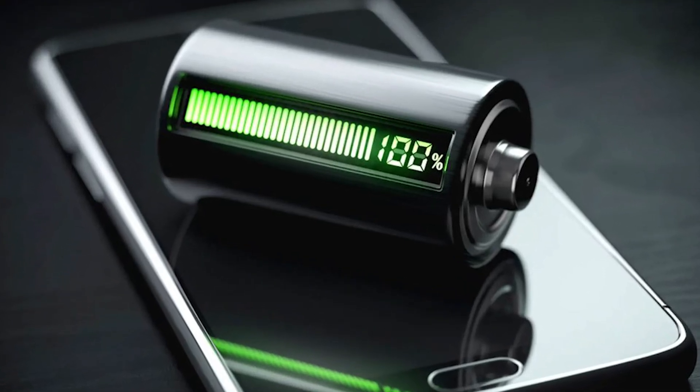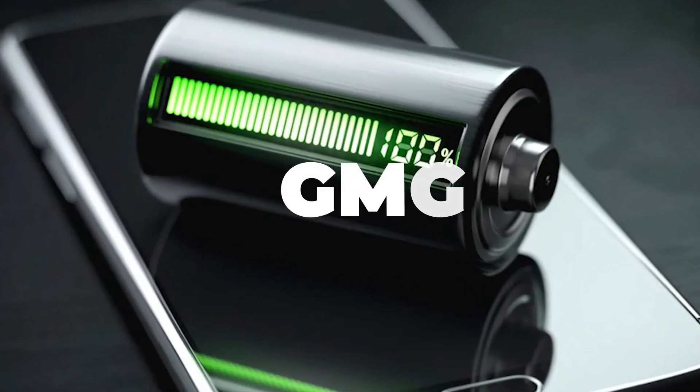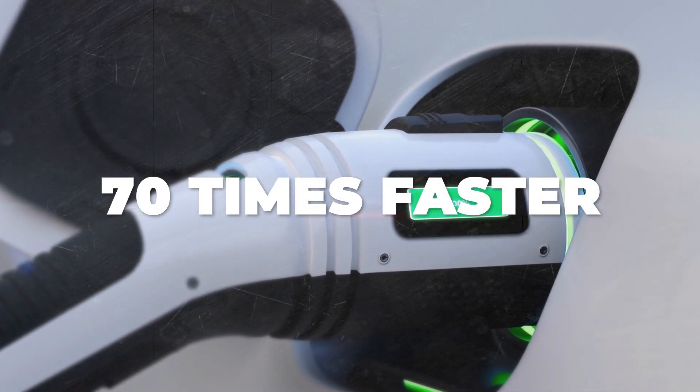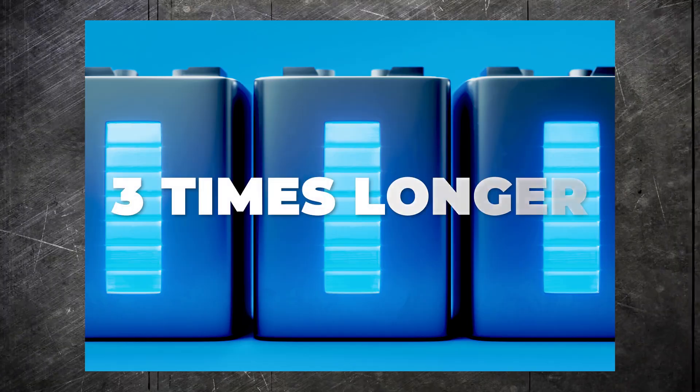A newly developed graphene super battery of Australian company GMG is said to charge 70 times faster than conventional lithium ion batteries and should last three times longer.